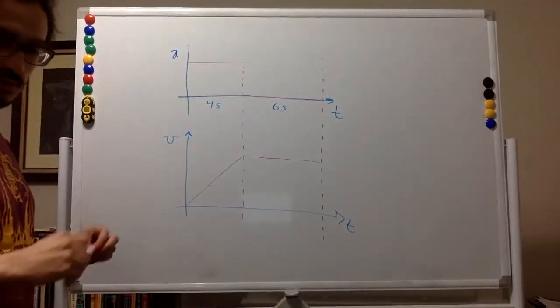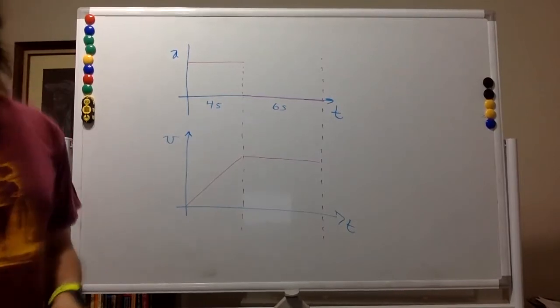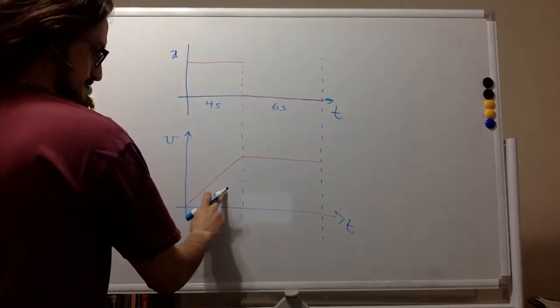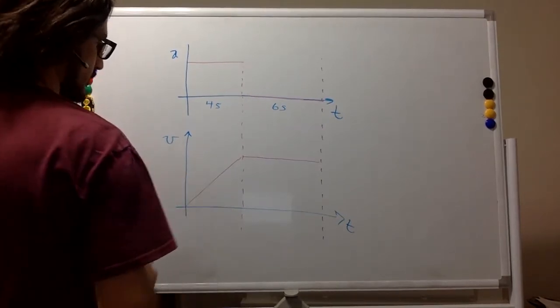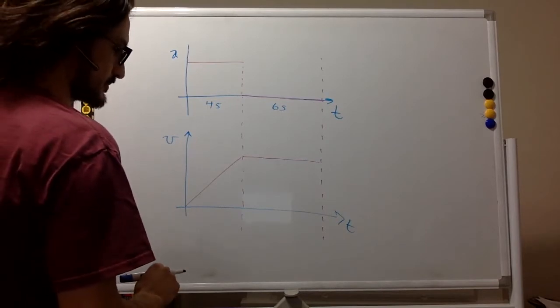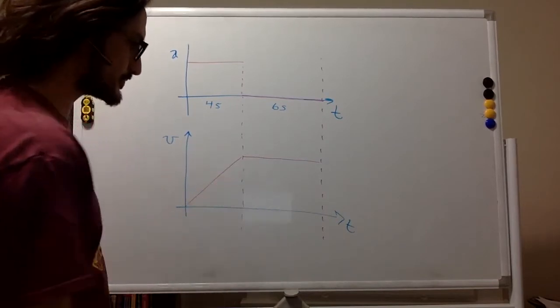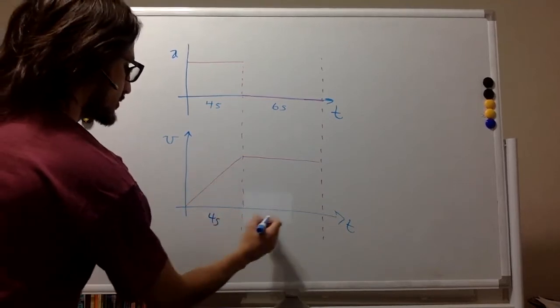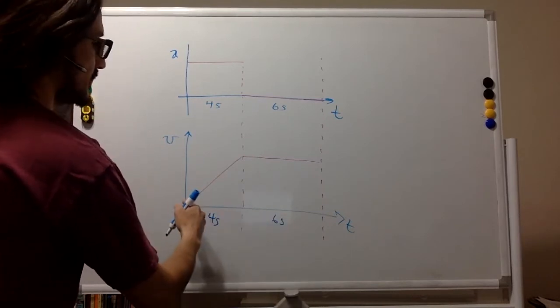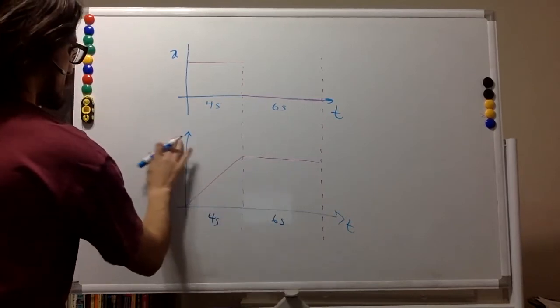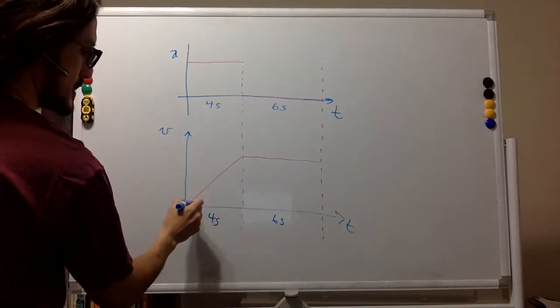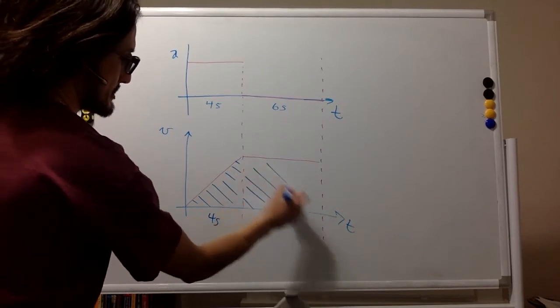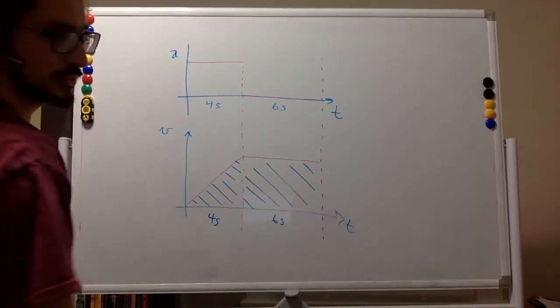So one way to do it is to realize that the area under the curve of the velocity graph is the distance. So we have four seconds here, six seconds. The area under the curve should be equal to 100.